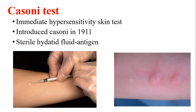In Casoni's test, fresh sterile hydatid fluid is used as antigen. The antigen is collected from a human or animal hydatid cyst, sterilized with Seitz or membrane filters. Then 0.2 ml is injected into the right arm as the test.